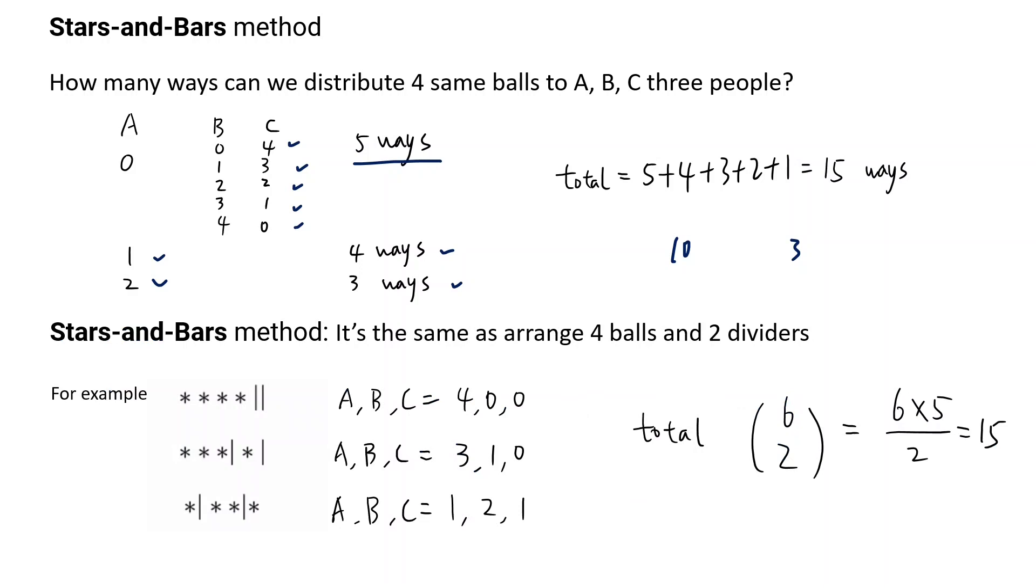Now it comes to the stars and bars method. Here's how it works. We have, say, still three people. One, two, three, four - we still have four balls. And we want to separate them to three people.